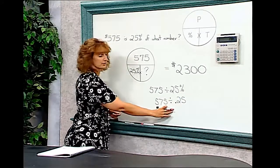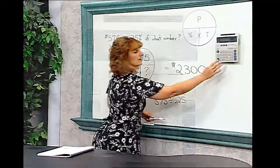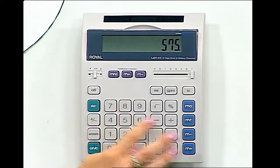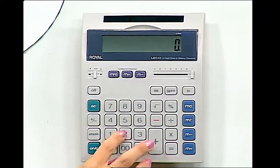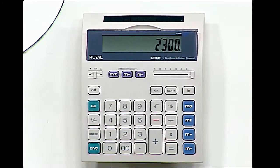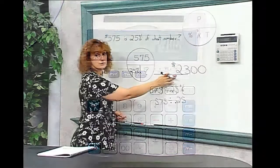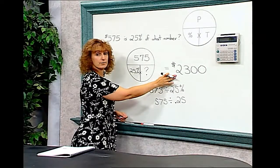This you could put into your calculator. 575 divided by .25, and you too would get the same answer of $2,300 for the price of the car.